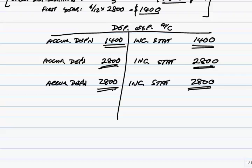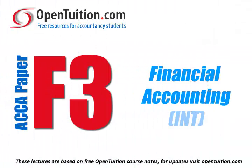Beautifully straightforward — just that one entry to learn. It's summarised on page 47. Calculate the figure — obviously a bit more work if you're using reducing balance — but once you've calculated the figure, the entry is always the same. Keep hold of that example, because we'll have a break, but in the next section we'll take the same example and look at what happens when we come eventually to sell the car.